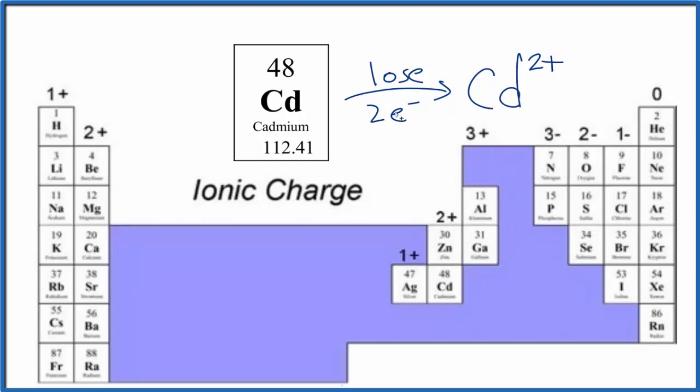So when you lose two electrons, since electrons are negative, that means you'll have a positive charge. This is the cadmium ion right here, Cd 2+, and this is really the only way you'll find cadmium as an ion.